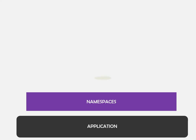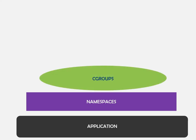And then we have C-groups. This is the mechanism that helps us control how much CPU, memory, disk IO, and network bandwidth an application gets.